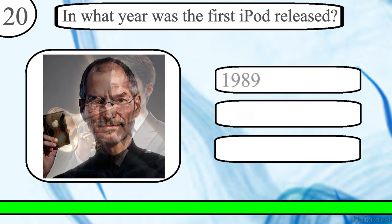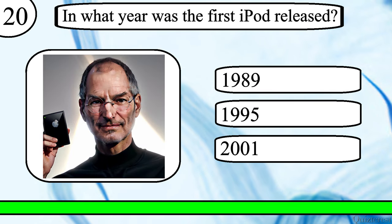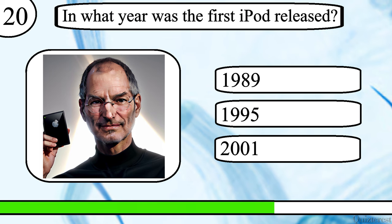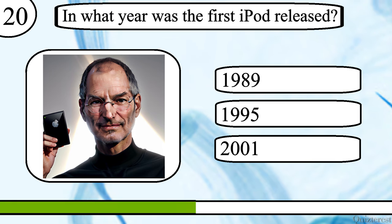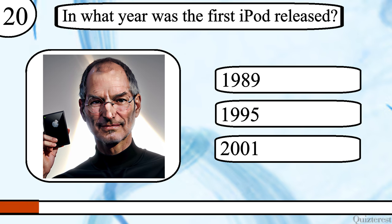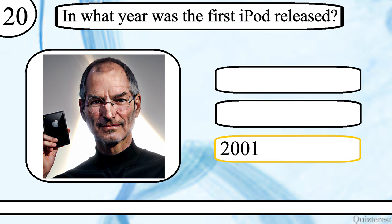Question 20. In what year was the first iPod released? 1989, 1995, or 2001? The correct answer is 2001.